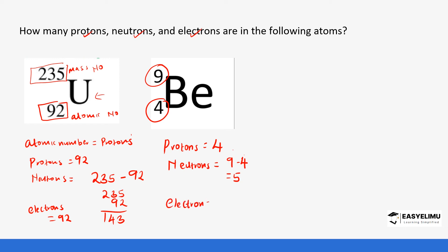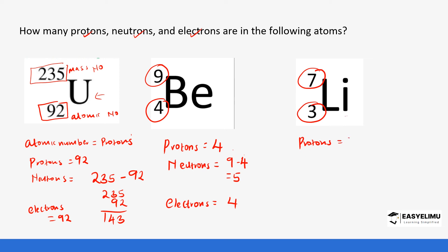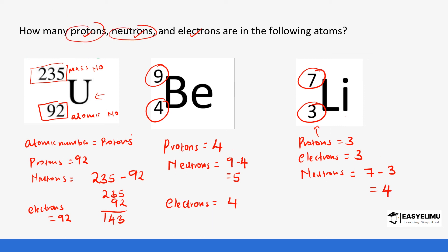Finally, lithium has a mass number of 7 and an atomic number of 3. The number of protons is 3, and since it is neutral, the number of electrons is also 3. The number of neutrons is found by taking the mass number, 7, and subtracting the number of protons, 3, giving us 4 neutrons. So we are able to find the number of protons, neutrons, and electrons just from the symbolic representation of the atom.